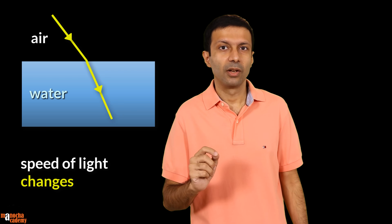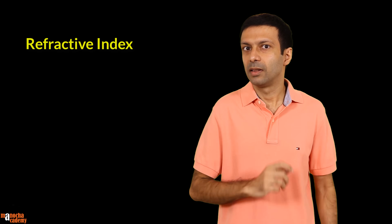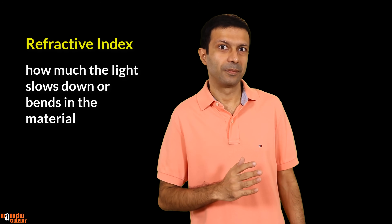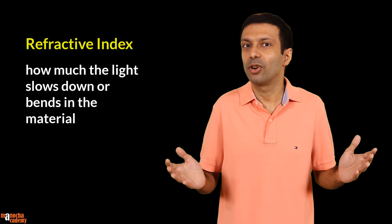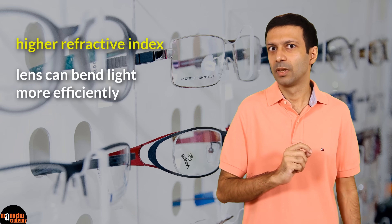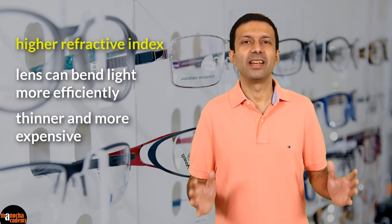But why does light bend? Because the speed of light changes when it travels from one material to another. In this video we'll talk about a number called refractive index of a material that measures how much the light slows down in the material or how much it bends. Have you heard of this term refractive index in your everyday lives? If you go to an eyeglass shop, when choosing the lens you'll hear about this term refractive index. Higher refractive index means the lens can bend the light more efficiently, so your lens will be thinner and more expensive. Let's learn all about refractive index in this video.